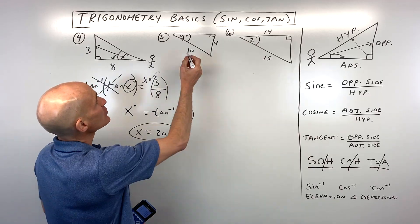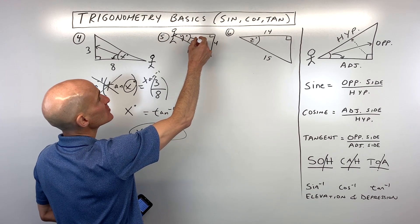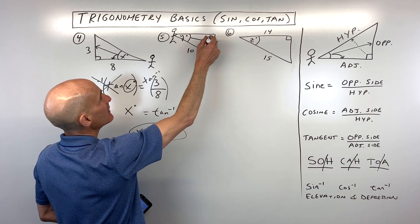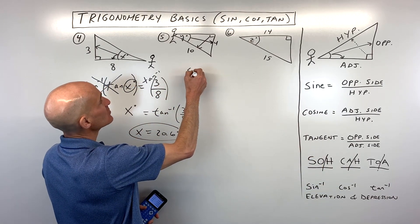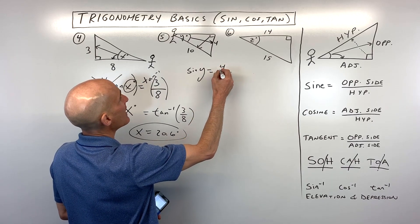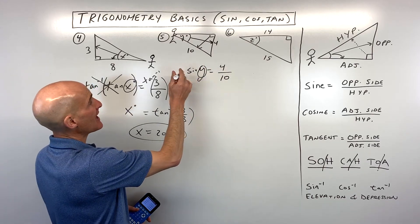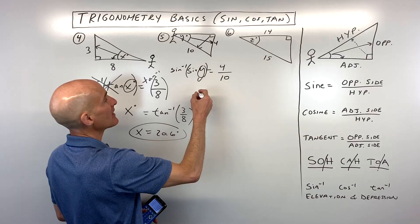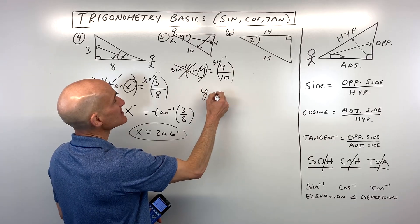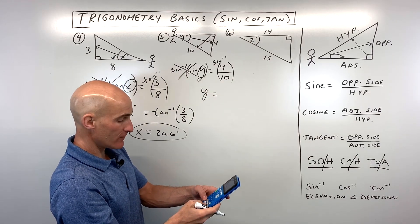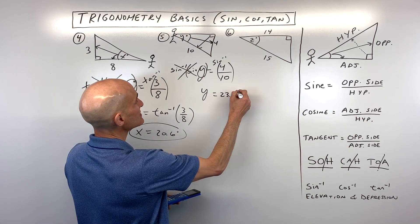For number five, we're solving for angle y. Positioning ourselves at the angle, what trig ratio ties together the opposite side and the hypotenuse? Opposite and hypotenuse — that's SOH, or sine. So the sine of angle y equals opposite four over hypotenuse ten. To get angle y by itself, take the sine inverse of both sides. Using the calculator, sine inverse of four divided by ten comes out to an angle of 23.6 degrees.